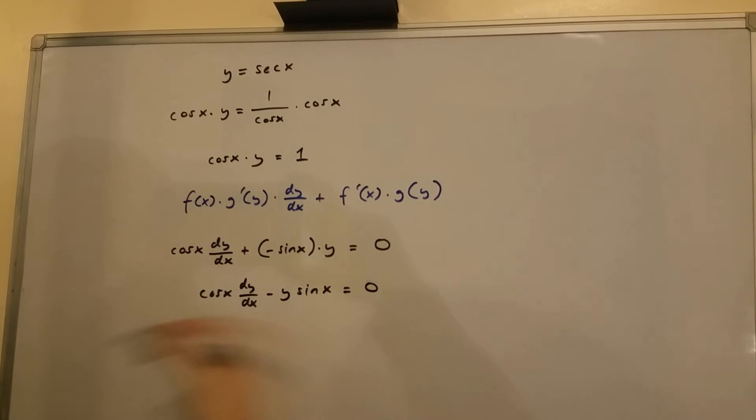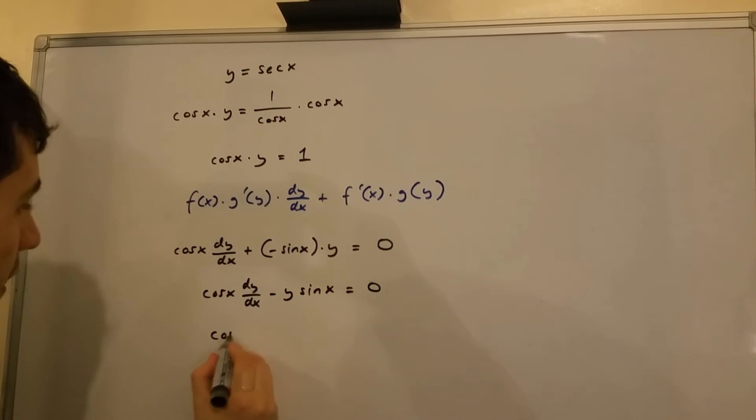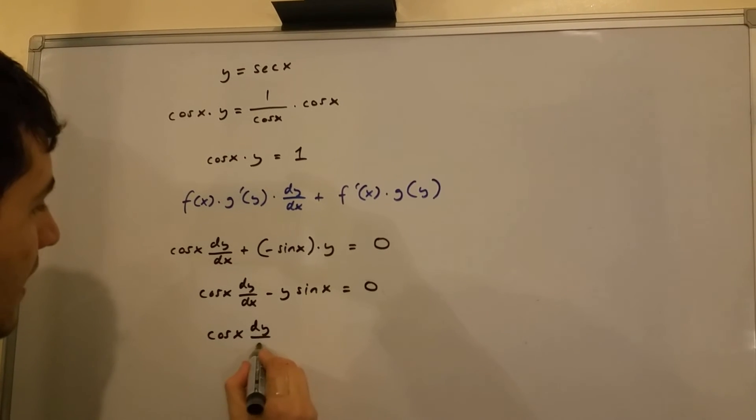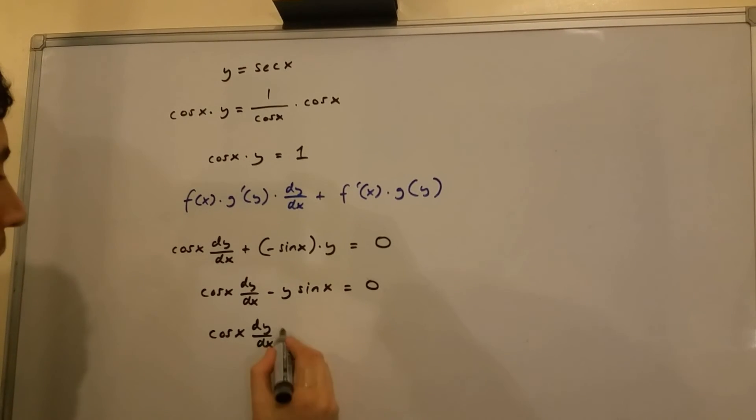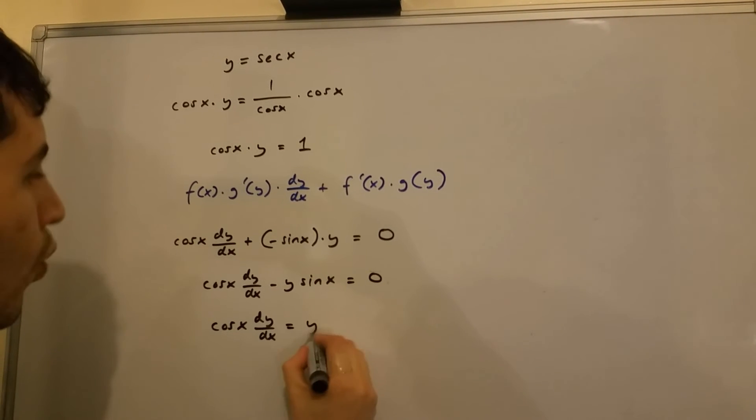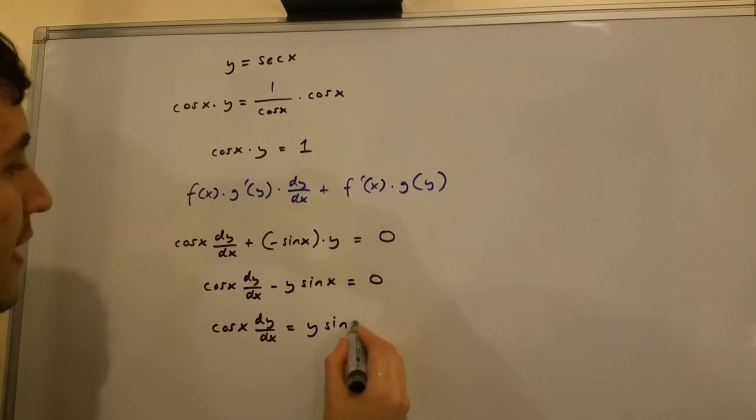And we can simplify this further. So we get cos x multiplied by dy over dx equals y multiplied by sin x.